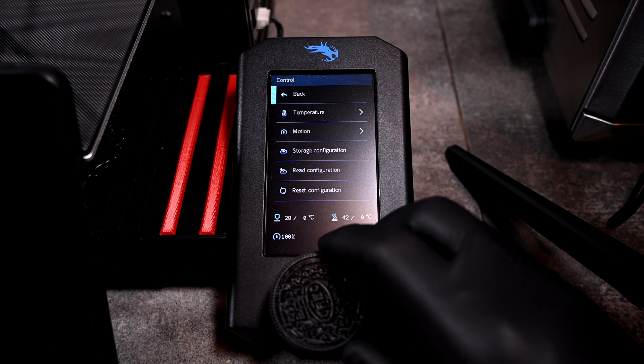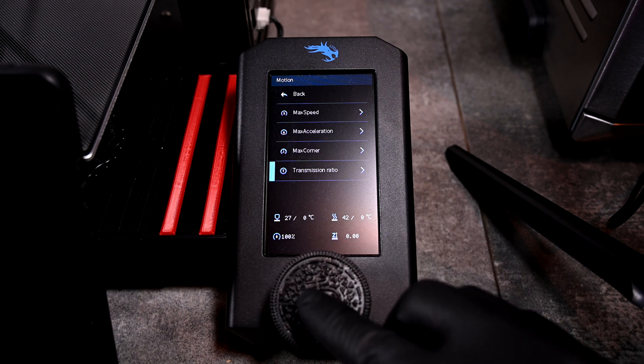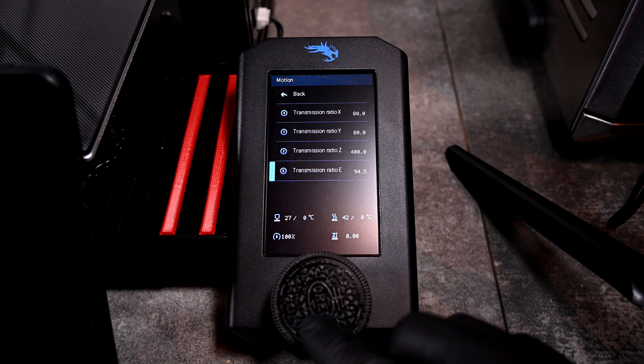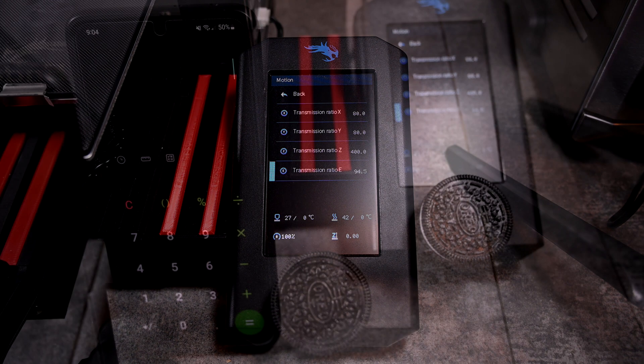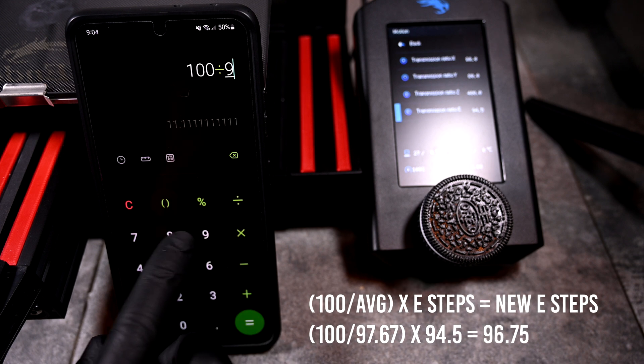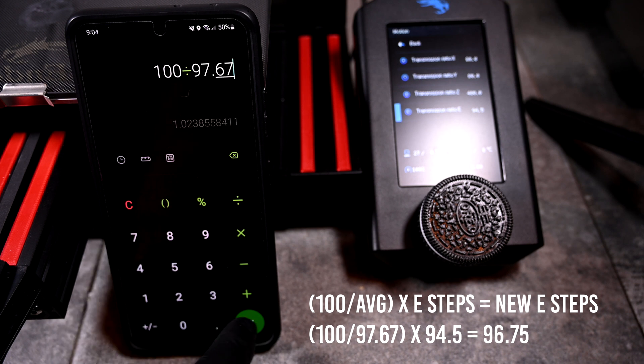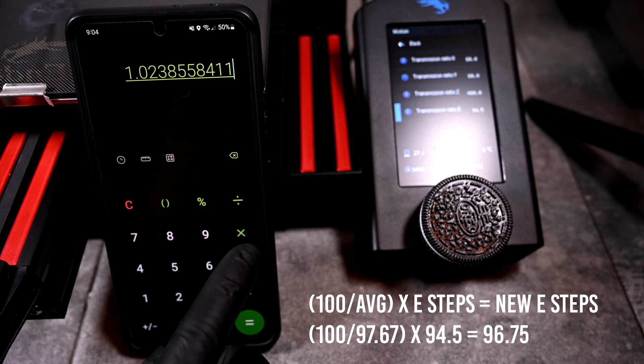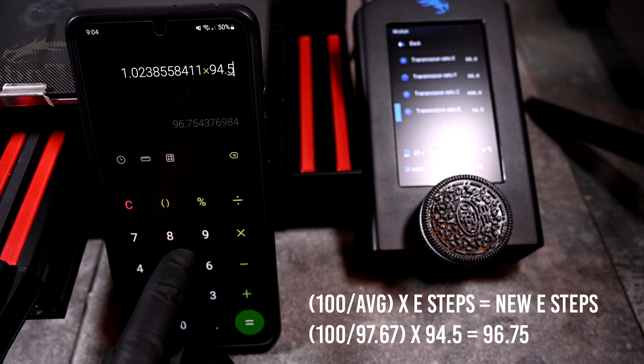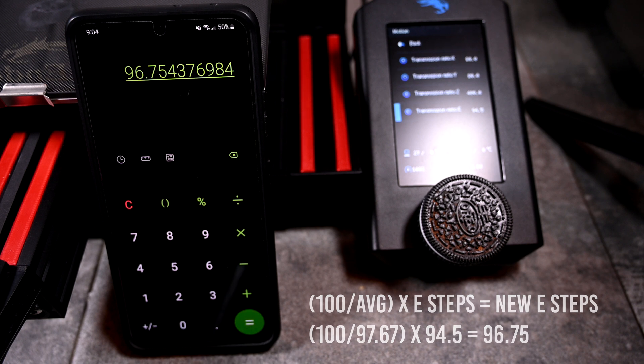Next, I'll need the current E steps. This is in the Control menu, under Motion, Transmission Ratio, and Transmission Ratio E for extruder. By default, Creality printers are set to 93, but mine is different from a previous calibration. I'll then use the simple formula: 100 divided by my mean of 97.67 multiplied by my current E steps. This results in a new transmission ratio of 96.75, though I'll round it to 96.7.